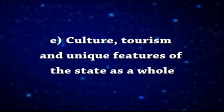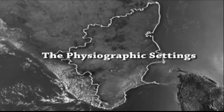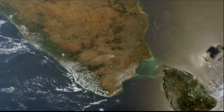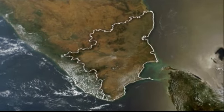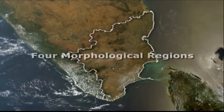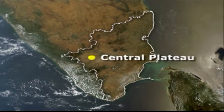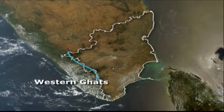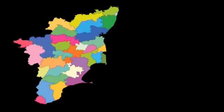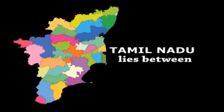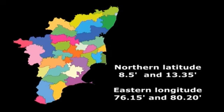Tourism and unique features of the state as a whole are also covered. Based on the physiographic characteristics, Tamil Nadu state has been divided into four major morphological regions comprising of the coastal plains, eastern Ghats, central plateau, and western Ghats. Geographically, the state of Tamil Nadu lies between northern latitude of 8.5 minutes and 13.35 minutes.